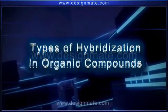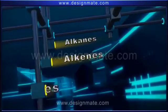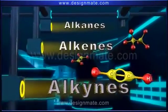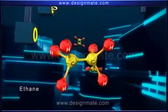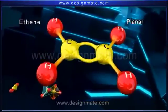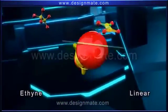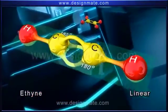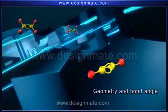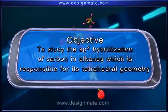Hydrocarbons are classified as alkanes, alkenes, and alkynes. Consider ethane, ethene, and ethyne as their respective examples. Ethane is ditetrahedral with a bond angle of 109°28', ethene is a planar molecule with a bond angle of 120°, while ethyne is a linear molecule with a bond angle of 180°. All three hydrocarbons differ in geometry and bond angle due to a difference in the state of hybridization of the carbon atom in them.